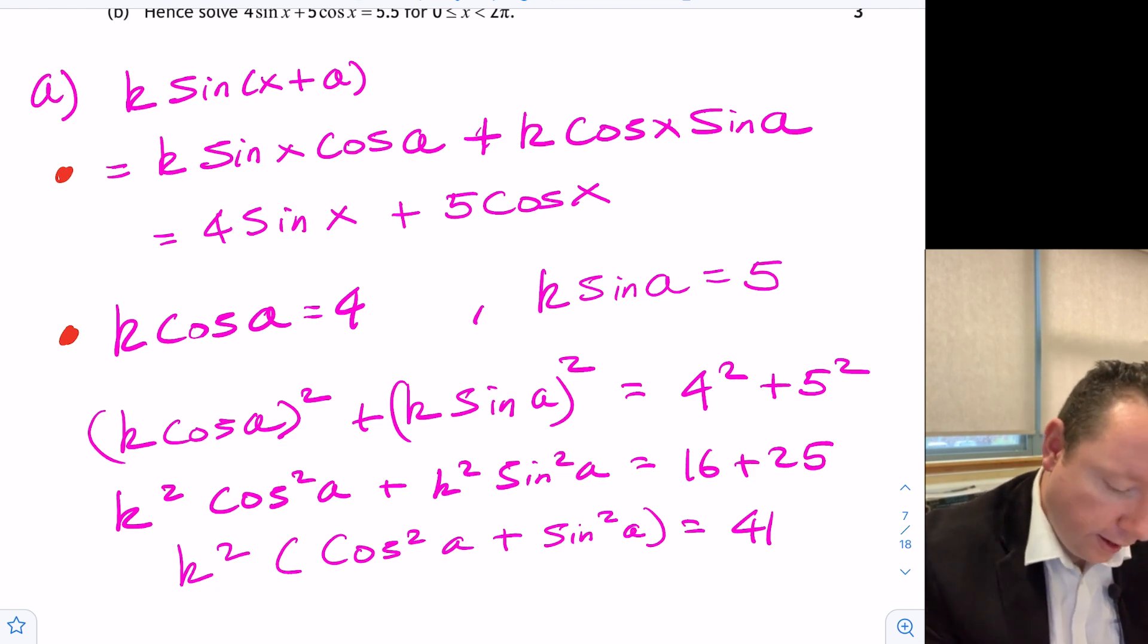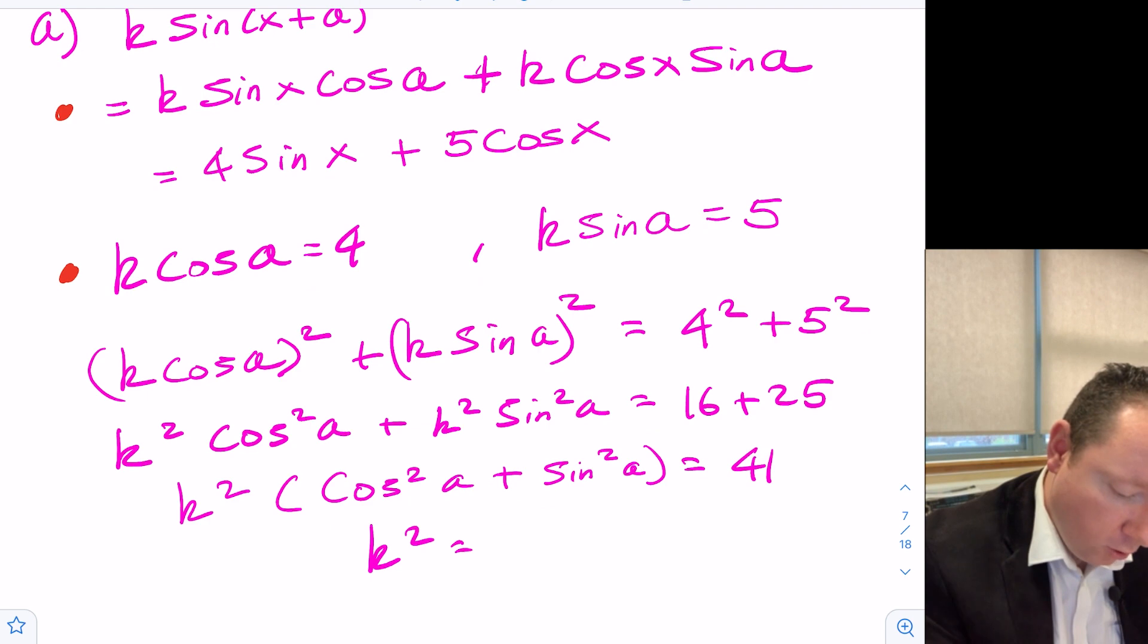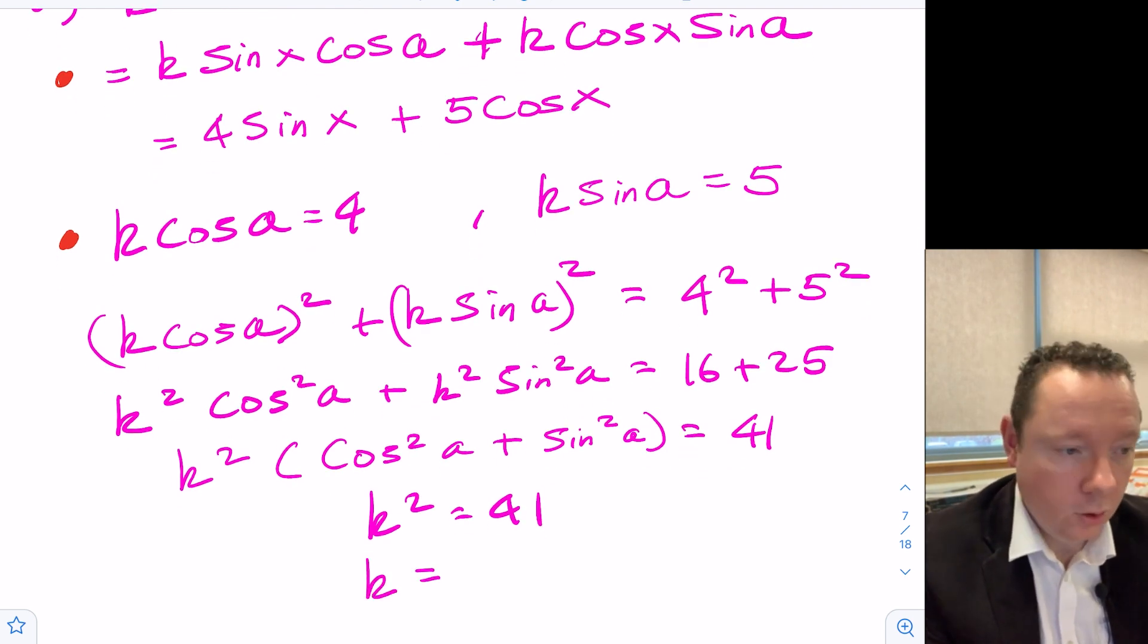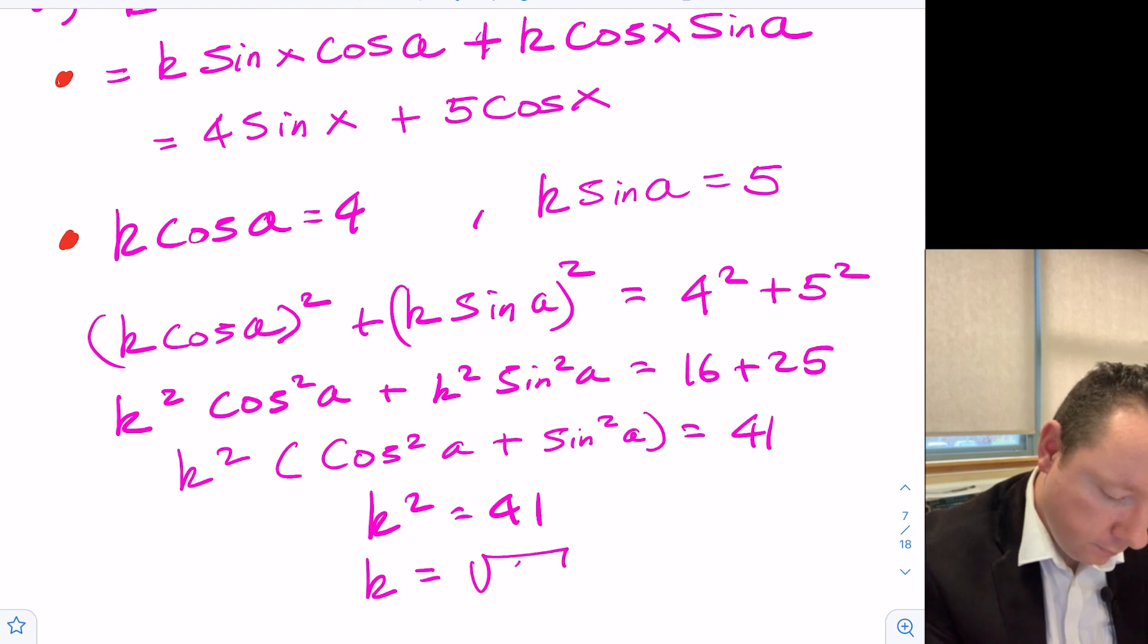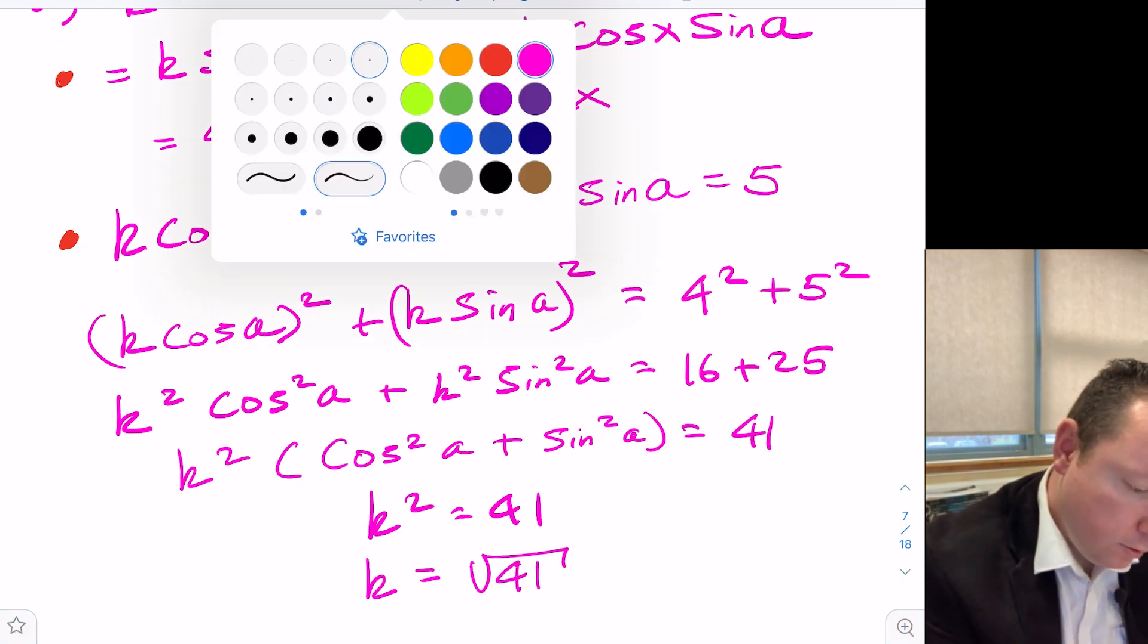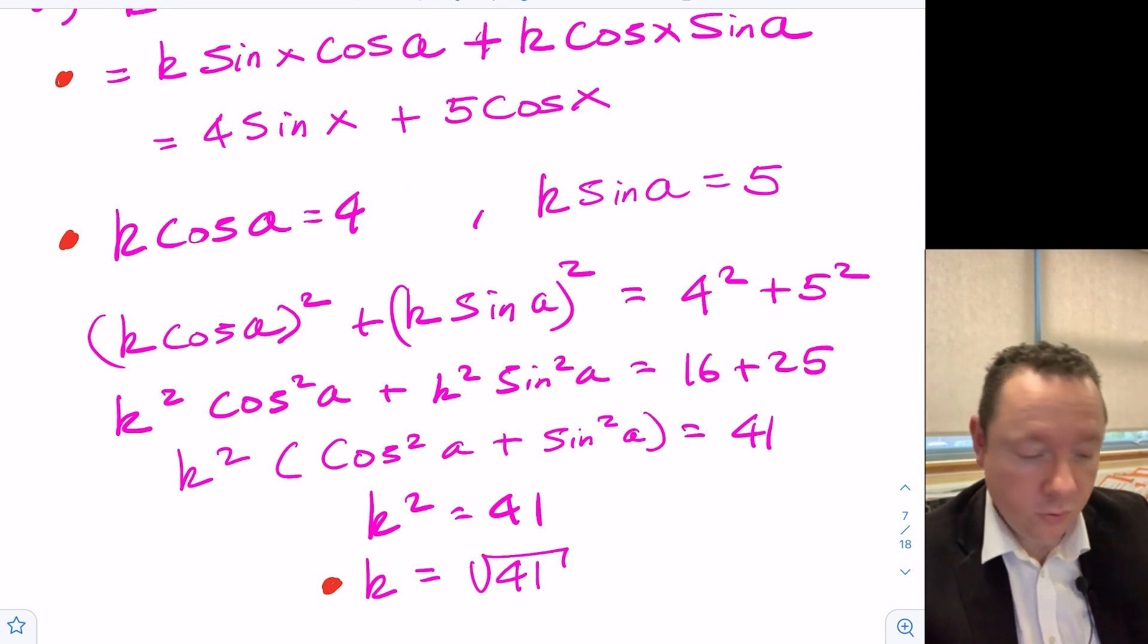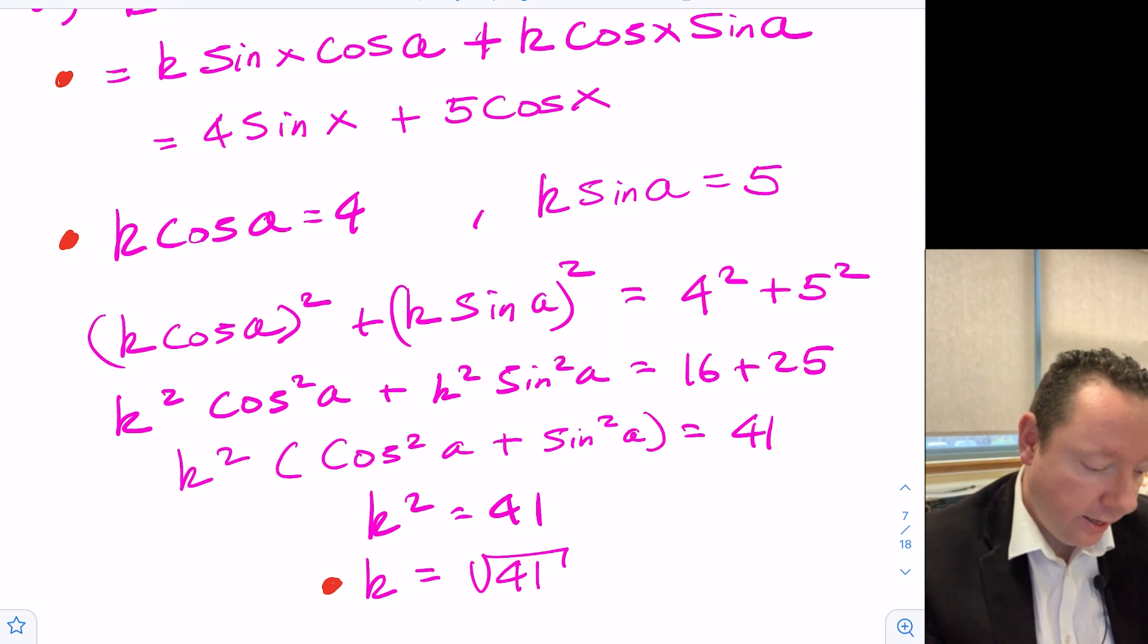Remember, this whole thing is just 1, so we can just write k squared equals 41. And k is therefore the square root of 41. Get a mark for working out k is the square root of 41. Your teacher might have just taught you to remember that to get k at this point, all you need to do is k squared equals 4 squared plus 5 squared. So you can skip writing this bit if you want.